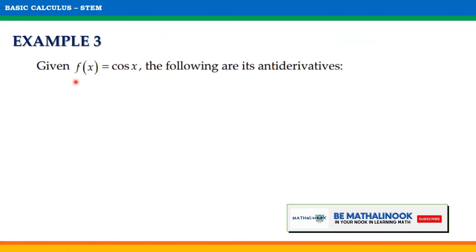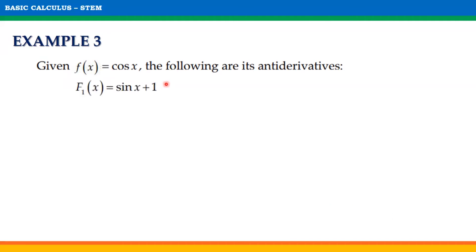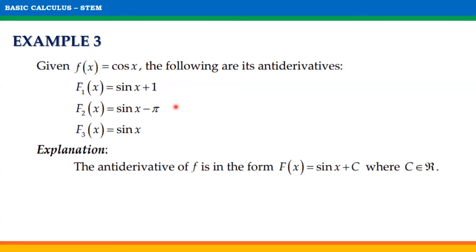Let us consider another example. Given f of x equal to cosine x, the following are its antiderivatives: F₁(x) = sin x + 1, F₂(x) = sin x − π, and F₃(x) = sin x. Notice that when we get the derivative of these three functions, we get f of x equal to cosine x. These functions differ only in the constant. Therefore, the antiderivative of f is in the form capital F of x equal to sine x plus c, where c is a real number.